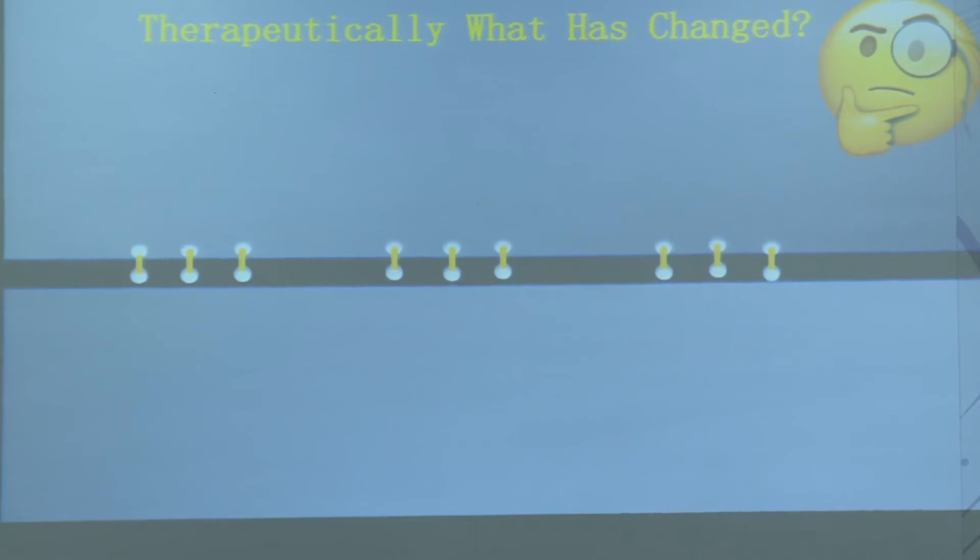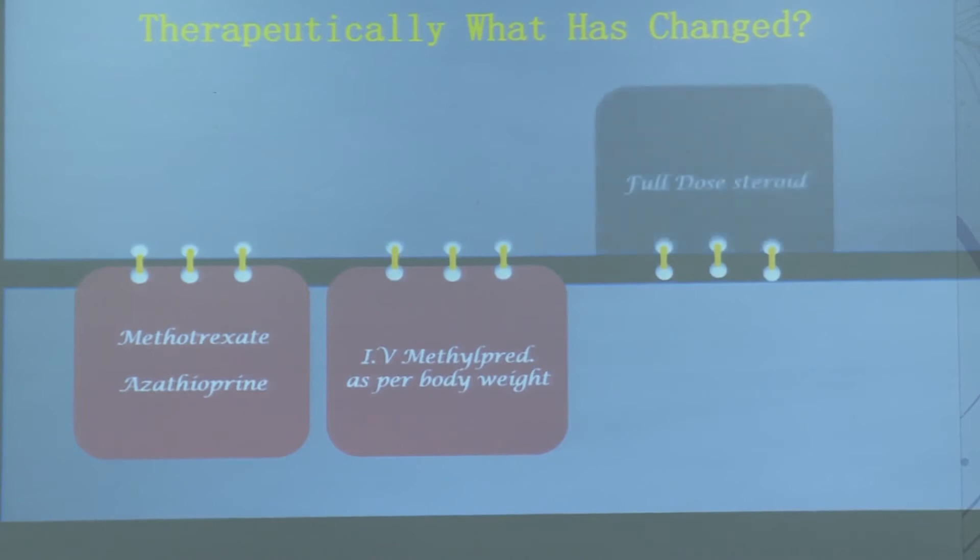So therapeutically, what has really changed? Immunosuppressants which we used were azathioprine and methotrexate, early parenteral steroids in the form of IV methylprednisolone, and full dose oral steroid 1 mg per kg.